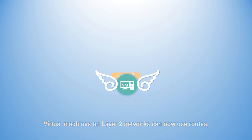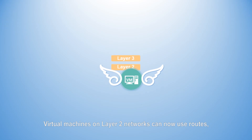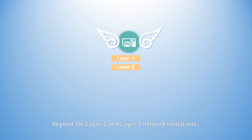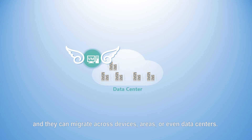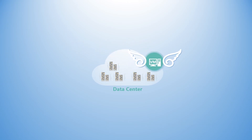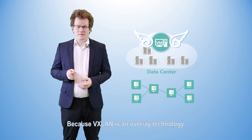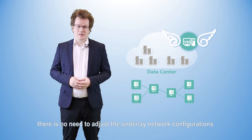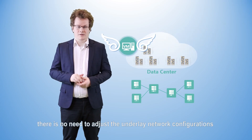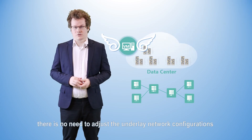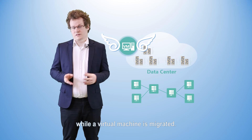Virtual machines on layer 2 networks are then able to use routes beyond the limitations of layer 2 and layer 3 networks, and they can migrate across devices, areas, or even data centers. Because VXLAN is an overlay technology, there is no need to adjust the underlay network configurations while a virtual machine is migrated.